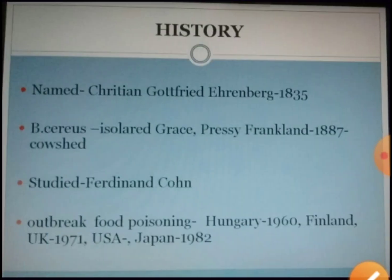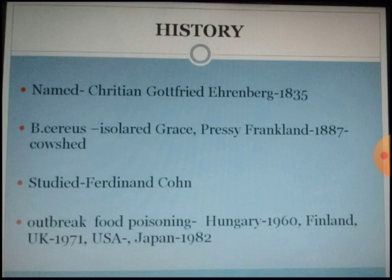Now let's see about the history of this organism. It was first named by Christian Gottfried Ahlenberg in 1835. Bacillus cereus was first isolated by Grace and Pressy Franklin in the year 1887, and it was isolated from a cow shed. It was then studied and explained by Friedland and Korn. There were several outbreaks of food poisoning due to this organism in Hungary, Finland, UK, USA, Japan, etc.